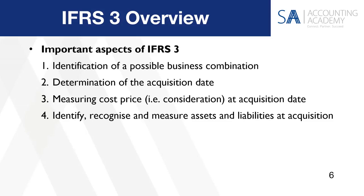Then we need to identify, recognize, and measure assets and liabilities at the acquisition date. This is actually the part where IFRS 3 can get creative sometimes — I find this part very interesting, because if I look at all of the steps in IFRS 3, this is probably the one that you would have to look at most carefully and intensively, so that you can make sure that your net asset value at the acquisition date is fairly stated, is complete, and consists of all possible identifiable assets and liabilities at that particular date. With the cost price, you have an agreement that stipulates more or less what the consideration actually consists of, because the acquirer and the acquiree have agreed on what this consideration will be.